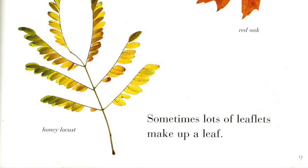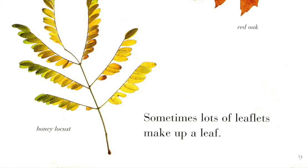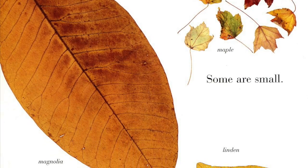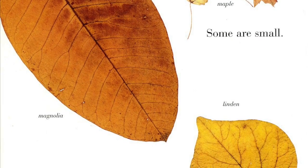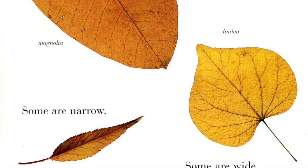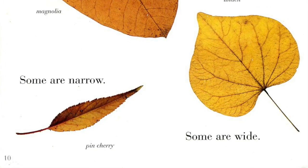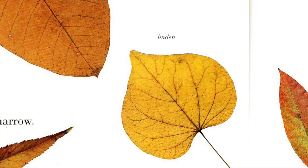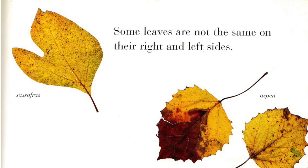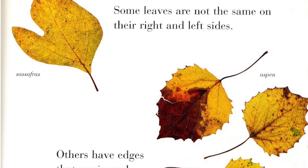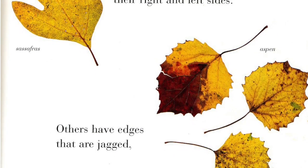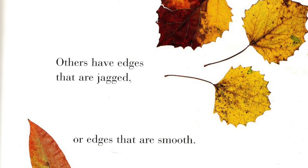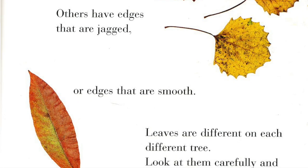Sometimes, lots of leaflets make up a leaf. Some are big. Some are small. Some are narrow. Some are wide. Some leaves are not the same on their right and left sides. Others have edges that are jagged, or edges that are smooth.